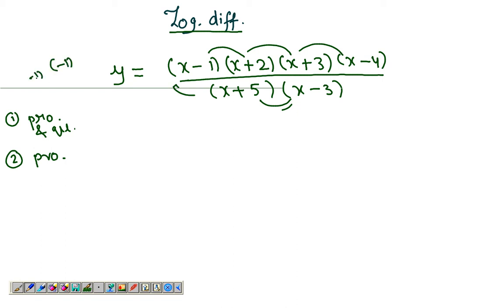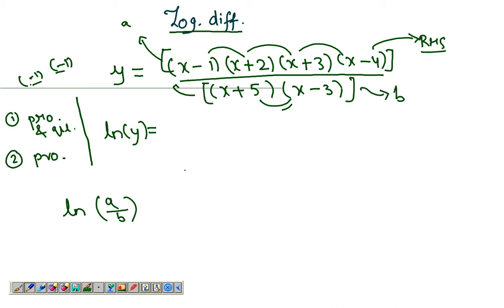Now the third method is exactly what is known as logarithmic differentiation. What I do is I take the natural log on both sides, so I get a log here. And now here we have a log of a over b when I take the log on the RHS. Let's say this whole thing is a and this whole thing is b, so we have the form log a over b.